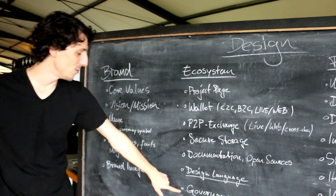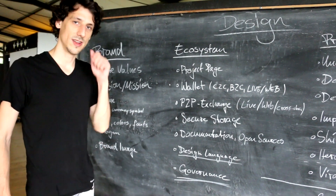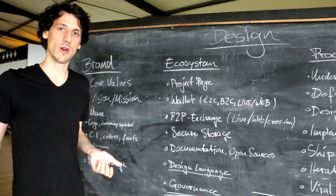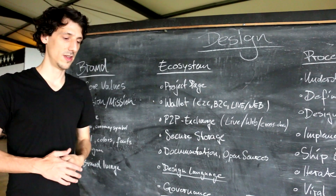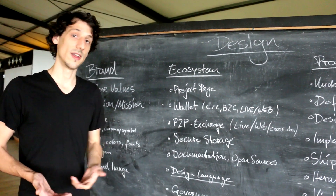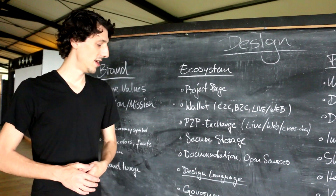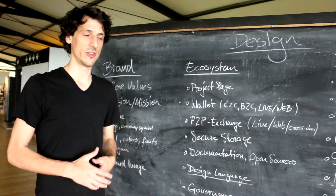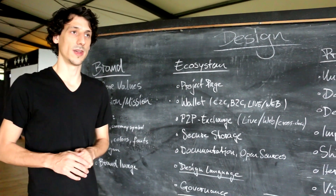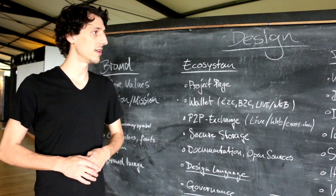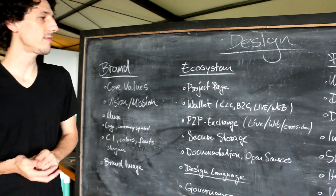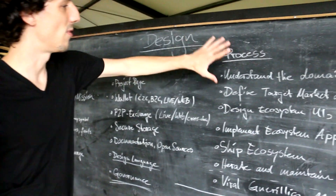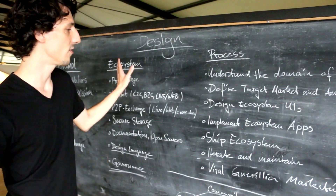The last element is the governance of the project. We are not a company — we are an open source project and we will fund a foundation, not a company. The governance of that foundation is a complex topic that we have not solved completely yet. This is roughly the process I see for the ecosystem.